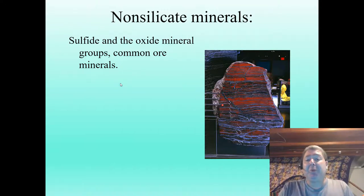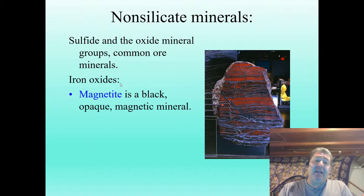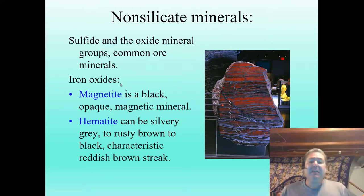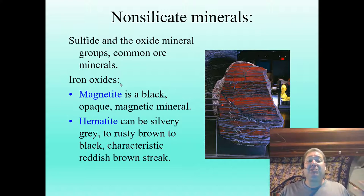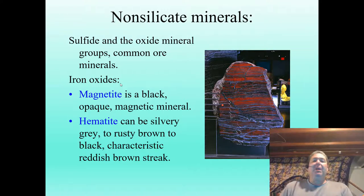Both sulfides and oxides make up very common ore minerals. Here in Michigan we mine a lot of iron oxides. Magnetite is a black, opaque mineral and its special property is that it's magnetic. Hematite can be very silver to gray but characteristically has a very reddish-brown or rusty-brown streak — that's where it gets its name: hematite, heme, hemoglobin, blood — a blood-red streak.